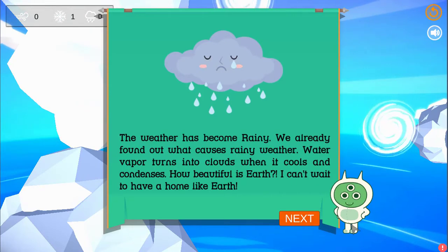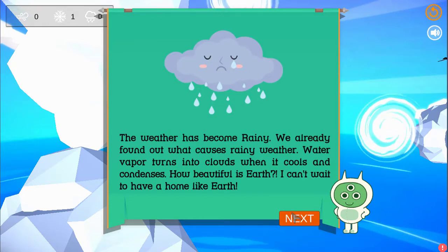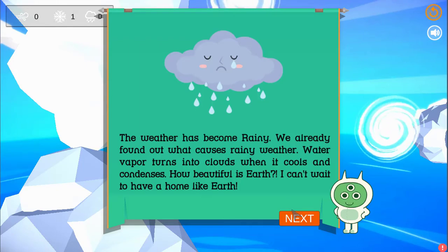The weather has become rainy. We already found out what causes rainy weather. Water vapor turns into clouds when it cools and condenses. How beautiful is Earth? I can't wait to have a home like Earth.